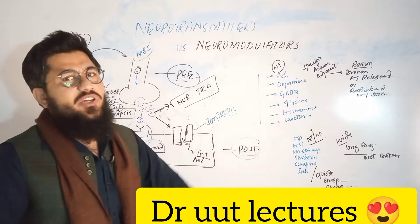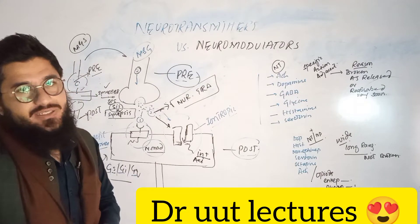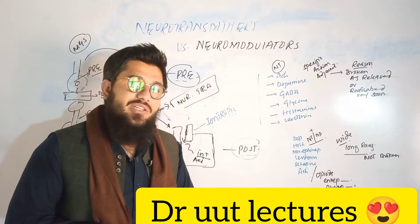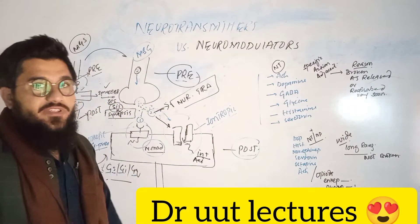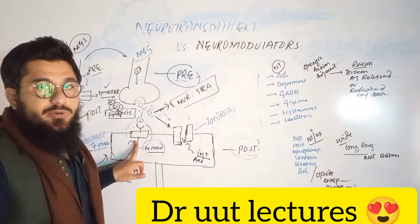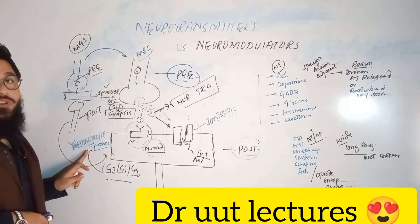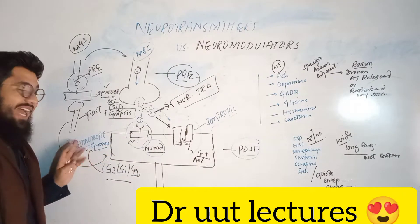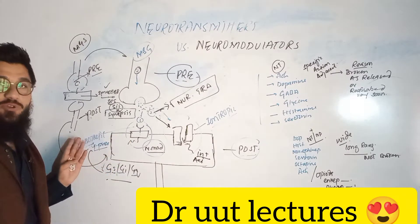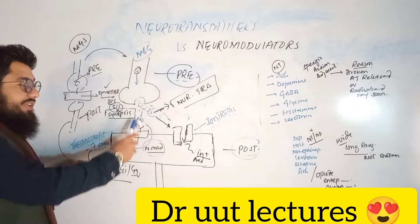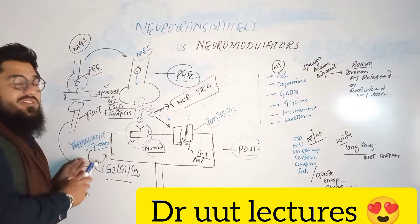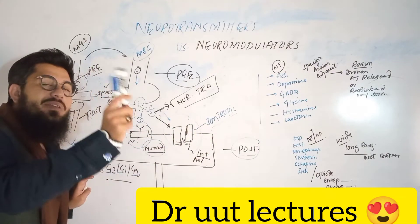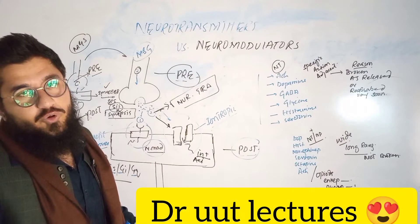Certain chemicals are only called neuromodulators — they do not interact with ionotropic receptors at all. For example, enkephalins and endorphins mostly interact with metabotropic receptors. Whatever your background knowledge of metabotropic receptors — whether you know them as G-proteins, or as GS/GI/GQ receptors — just remember: if a chemical interacts with a metabotropic receptor it is a neuromodulator; if with an ionotropic receptor, it is a neurotransmitter.